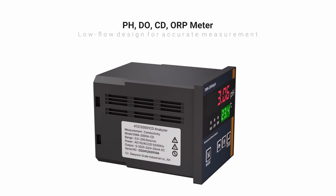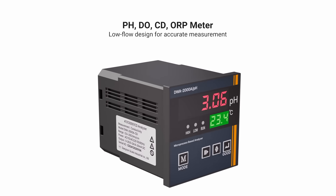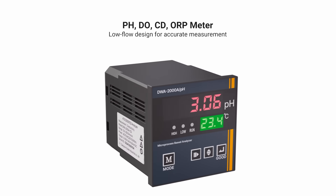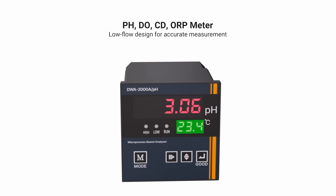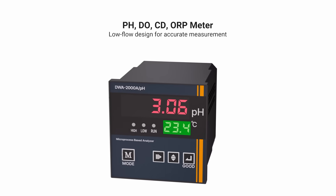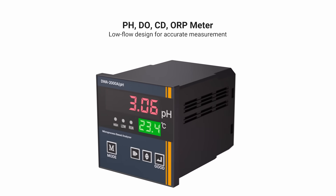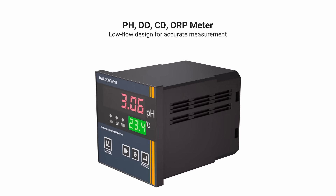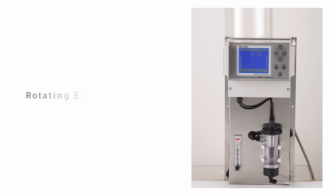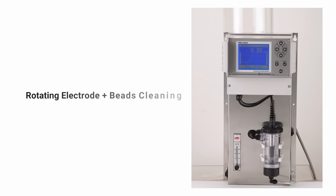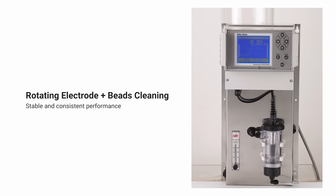This residual chlorine sensor with the best specifications and built-in functions uses a low flow rate. It is designed to enable accurate measurement within the pH and temperature range of general purified water. The rotating electrode method with bead cleaning provides stable measurement values.